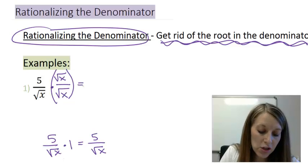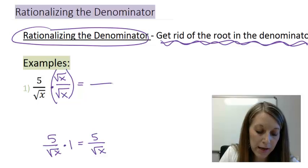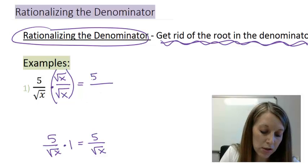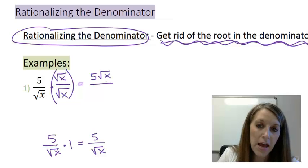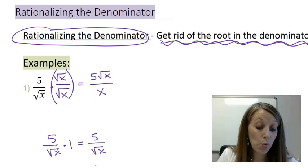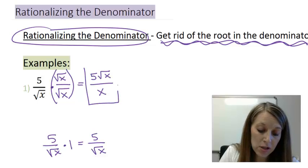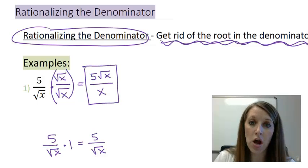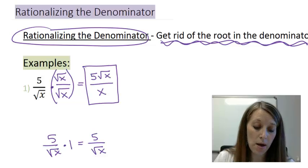So in fraction multiplication, I multiply straight across. So on the top, I have 5 times root x, which gives me a 5 root x. And in the bottom, root x times root x just leaves you with the piece that's on the inside, so that is x. So we have done what we set out to do. We have rationalized the denominator, meaning we have gotten rid of the root in this denominator here.